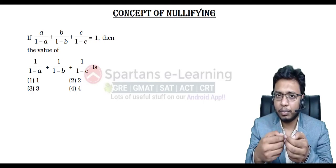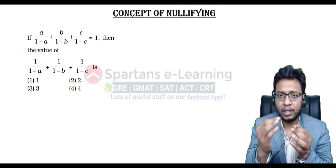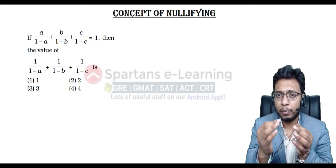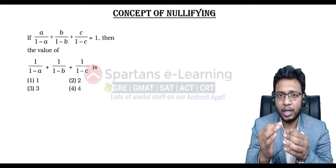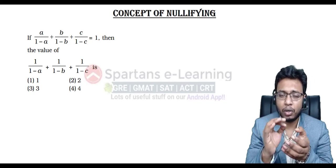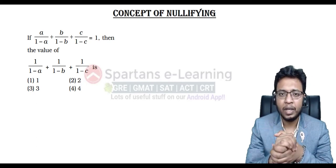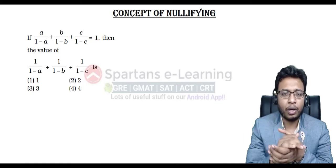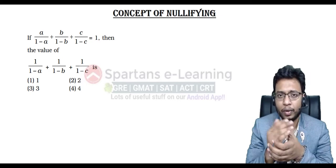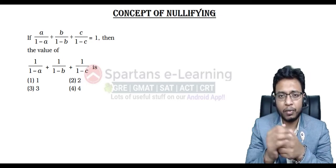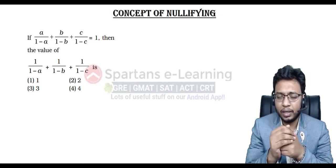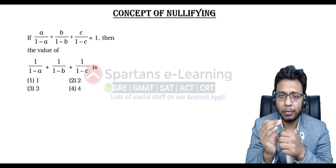Similarly, if you have three variables — x, y, z — then you must have a minimum of three equations given so that you can solve for x, y, and z. Similarly, if you have four variables, the minimum number of equations you need is four equations.